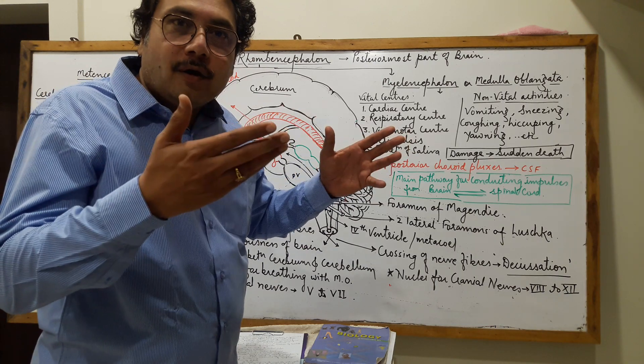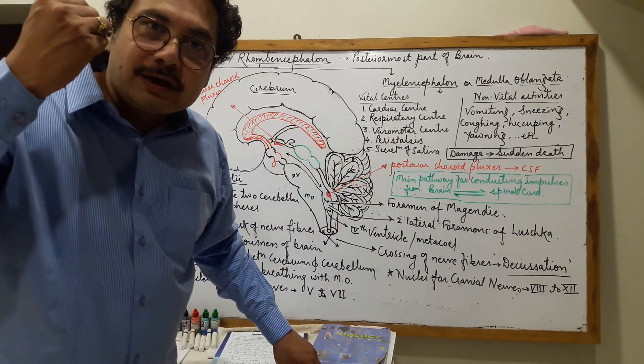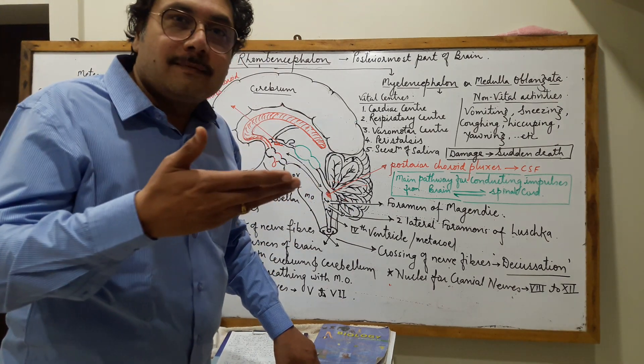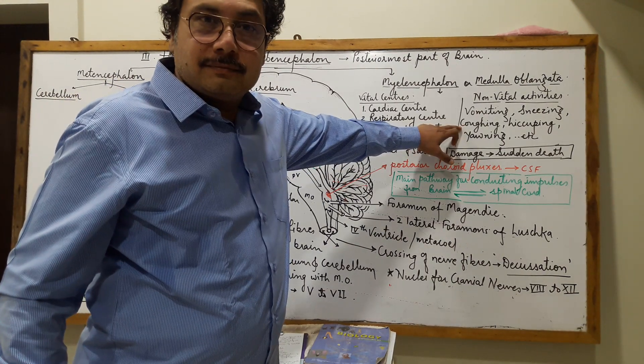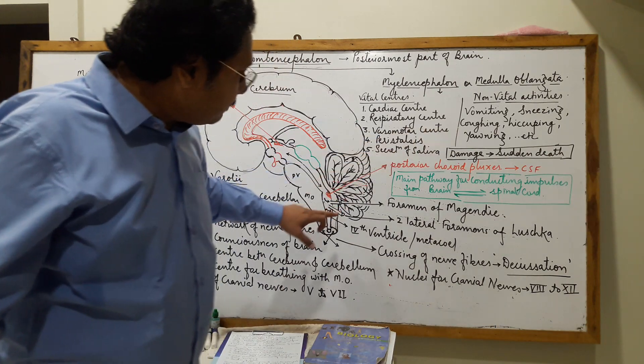The forceful expulsion of air—sneezing. When particles enter the nasal cavity, to expel them, there is a reflex action. Then coughing—secretion of excessive cough, again controlled by the medulla oblongata.